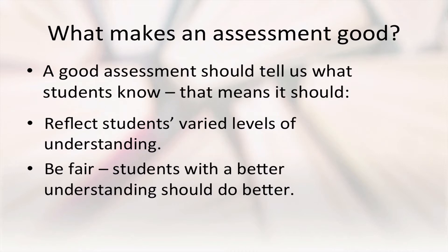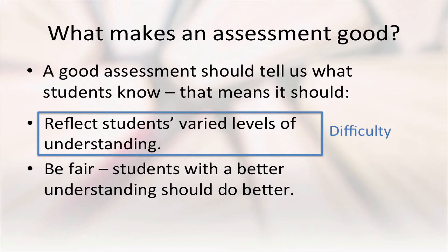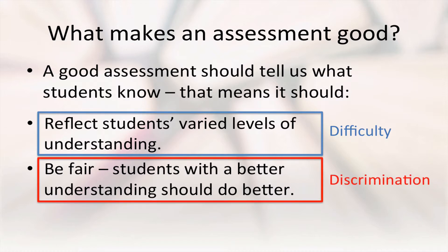To understand assessment statistics, we first have to think about what makes an assessment a good one. There are two things any good assessment must do. First, it must reflect students' varied levels of understanding, giving students with both strong and weak understandings of the material an opportunity to demonstrate what they know and to learn from their results. Second, it must be fair. Students' performance on each question should reflect their level of understanding for the corresponding material, rather than language difficulties or random chance, for example. These two requirements are reflected in the difficulty and discrimination of assessment items.